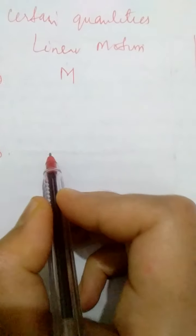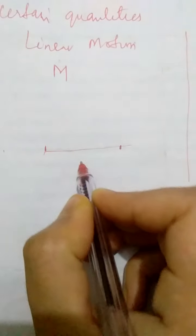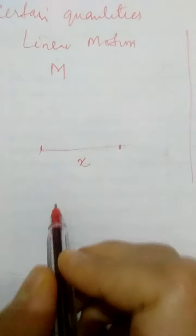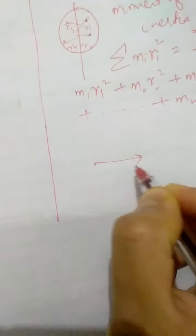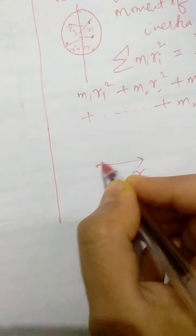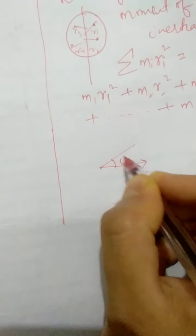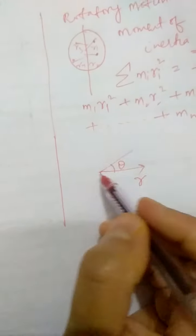Number two: in case of linear motion, we define the displacement between any two points as x — the linear displacement. But in case of rotatory motion, we define a radius vector with respect to which rotations are taking place, and rotations are always discussed in terms of the angle by how much the body has turned. So instead of x, we define theta here — angular displacement.